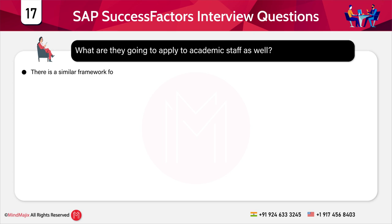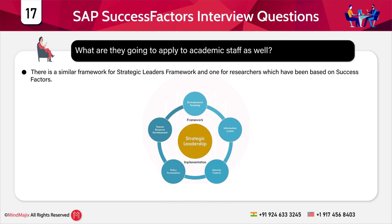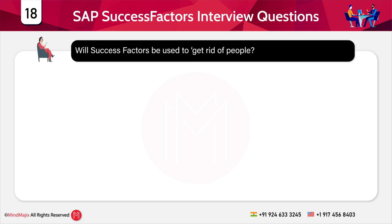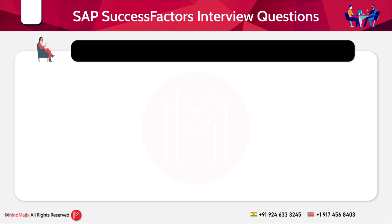The next question is: will success factors apply to academic staff as well? There is a similar framework — the Strategic Leaders Framework — and the idea is to have something similar for staff groups in the university. The next question is: will success factors be used to get rid of people? That is not why success factors have been developed; they are used to develop individuals. However, if behavior is essential to the job and there is no development, it could become a performance issue.